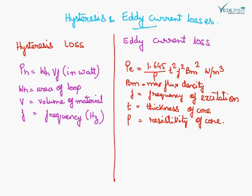When the magnetic material undergoes cyclic magnetization, two types of power losses occur. First is hysteresis loss and the second one is eddy current loss. Hysteresis loss PH is given by WH times V times F in watts, where WH is the area of loop under hysteresis in the B-H curve, V is the volume of the material, and F is the frequency.